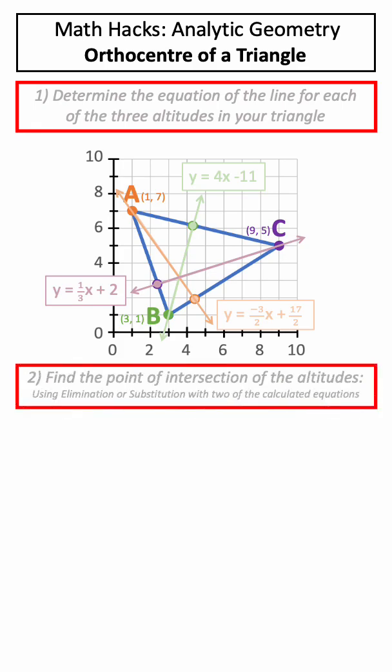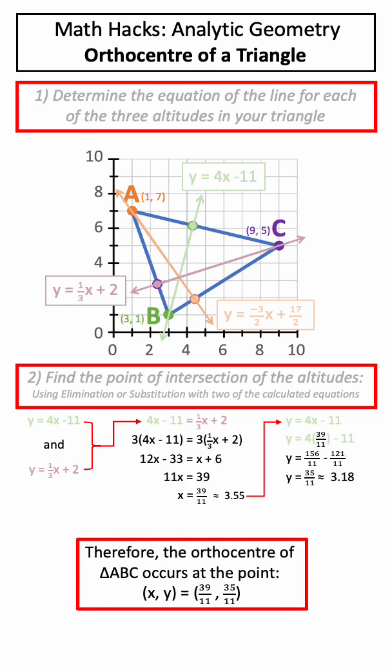Once we have all our equations, we can find the point of intersection of the altitudes by using substitution or elimination on two of our different equations. If we do this, we determine the value of the orthocenter.